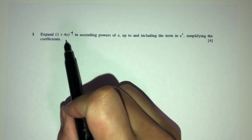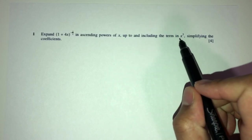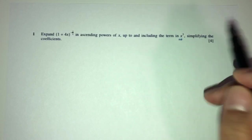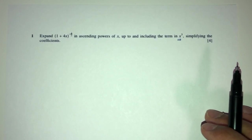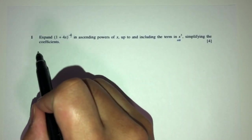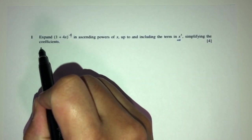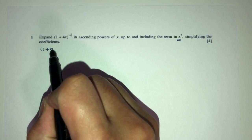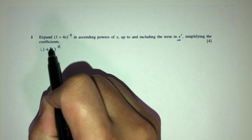Let's move on to question number 1. We have to expand this expression in ascending powers of x up to the term in x³. It is a binomial expansion. To use the binomial expansion formula, we use (1 + x)^n.